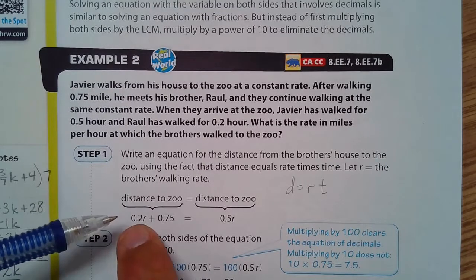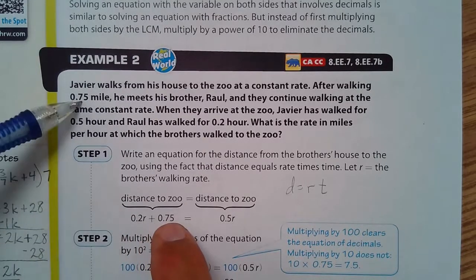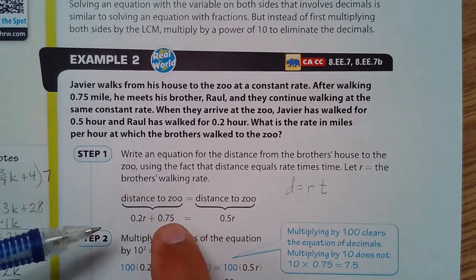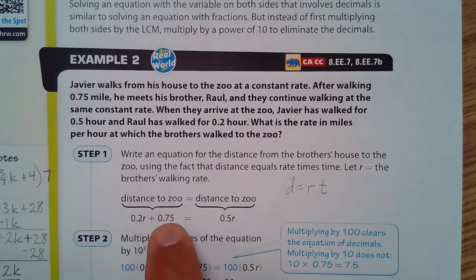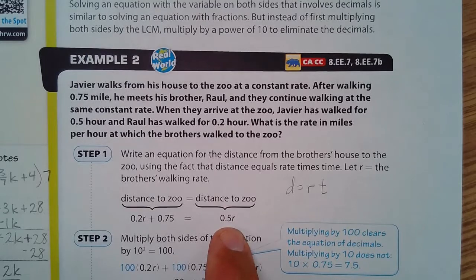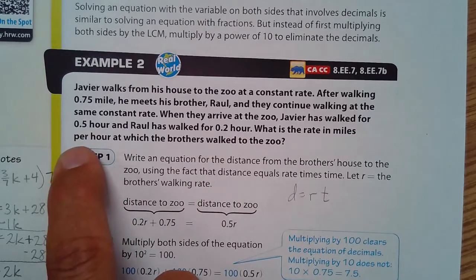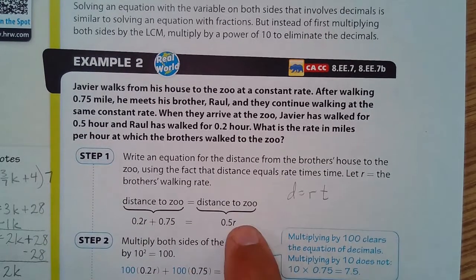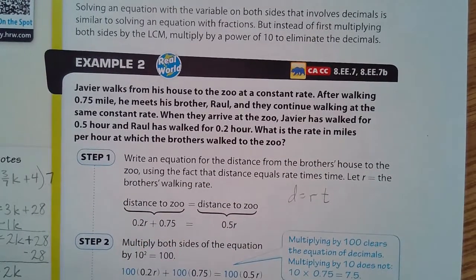So 0.2 of an hour plus the distance he's already walked gives you the entire distance to the zoo, which will be Javier's walk for 0.5 hour. When are they equal at that point?